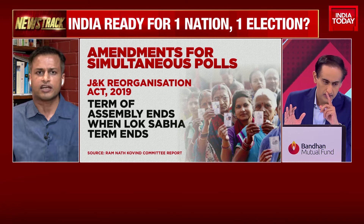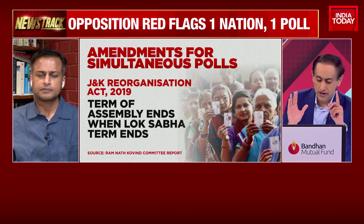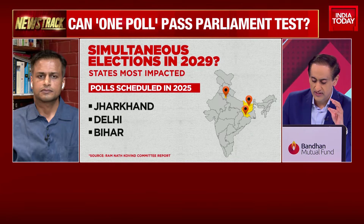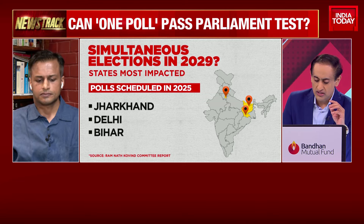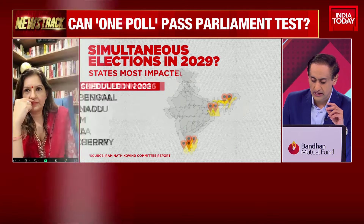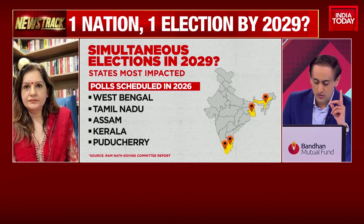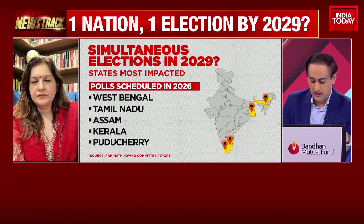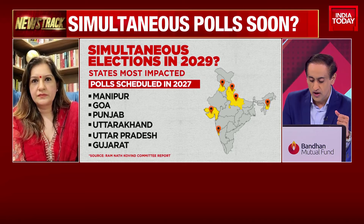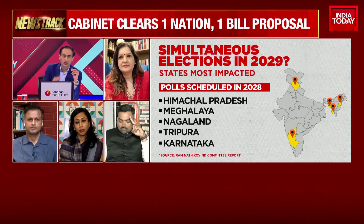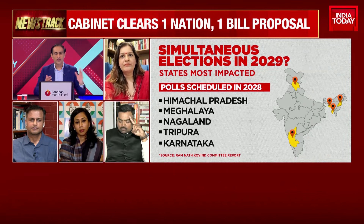The Niti Aayog has a report they put out. If you are trying to damage democracy and haven't even calculated how much it will cost — the Niti Aayog report says that at this moment, in this five-year election cycle, it costs 10 rupees per voter per year. The Niti Aayog estimates that in the new cycle with one election and smaller panchayat elections, it will cost 5 rupees per voter per year — basically halving the amount of money it costs to conduct elections in India over a five-year period.